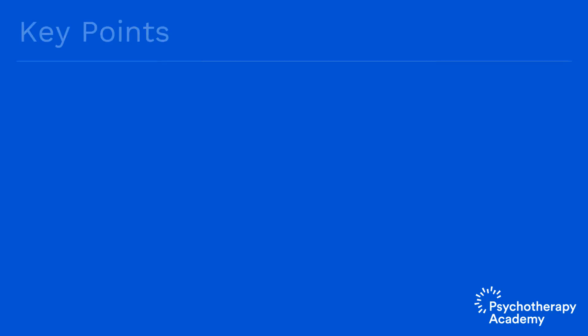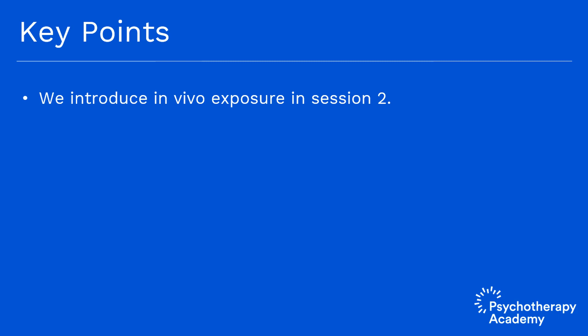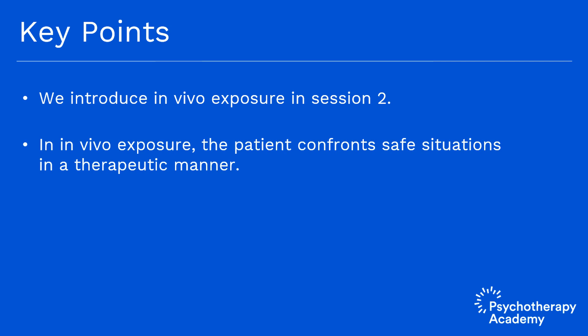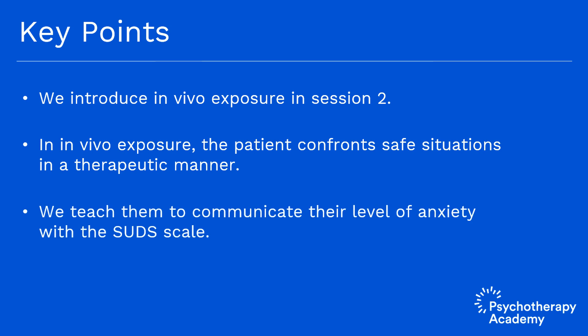Key points from this video: We introduced in vivo exposure in session two, beginning with the rationale. In in vivo exposure, we help the patient confront realistically safe situations they've been avoiding in a therapeutic manner so that something changes. We teach them to communicate their level of anxiety with the SUDS scale — Subjective Units of Discomfort — on a 0 to 100 scale, where 0 represents no anxiety and 100 represents panic-level anxiety.